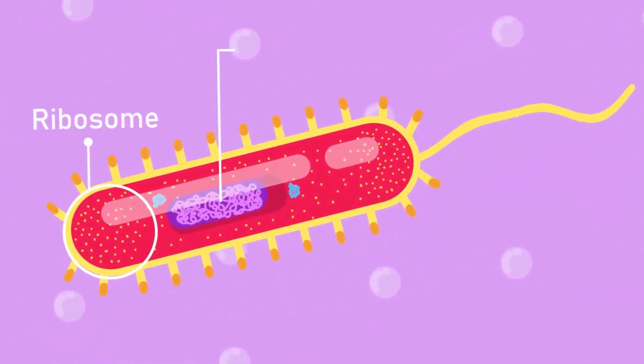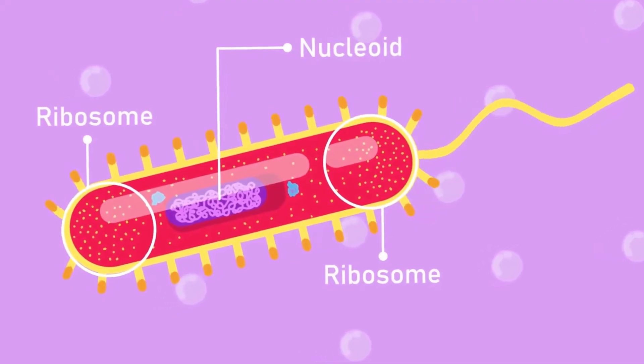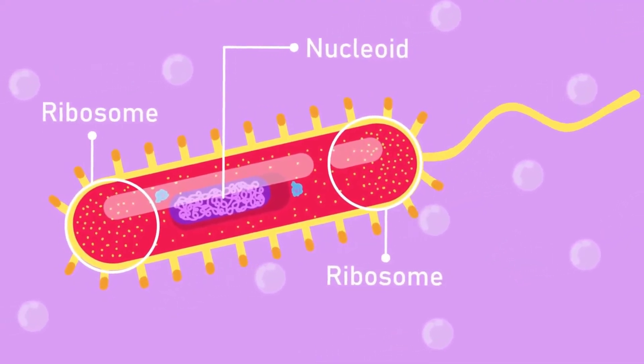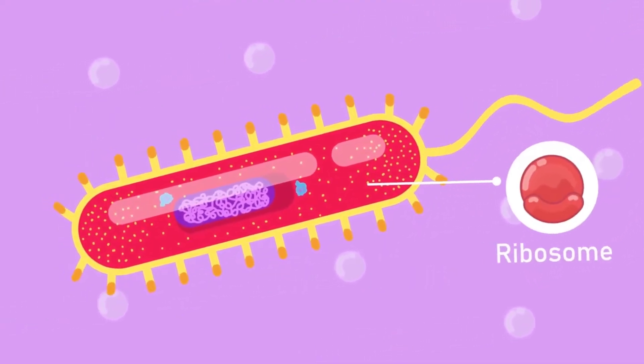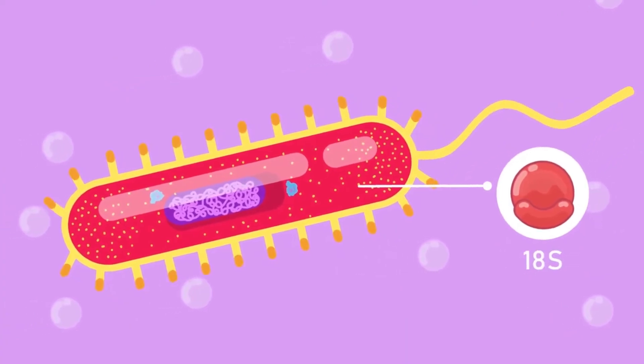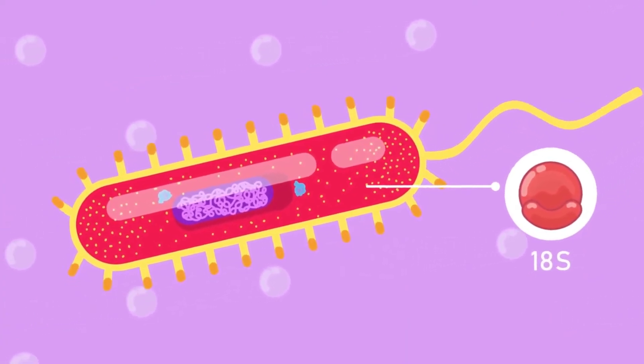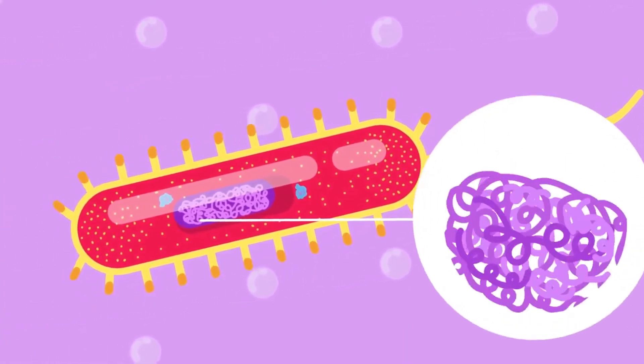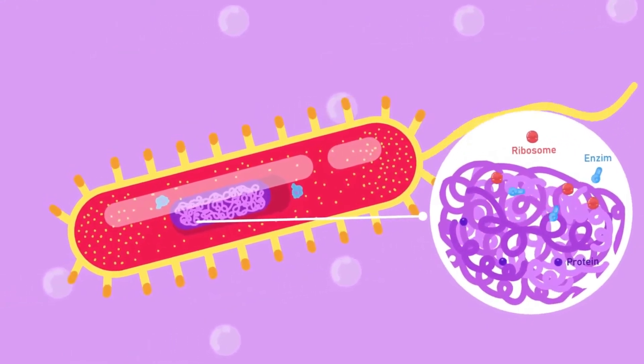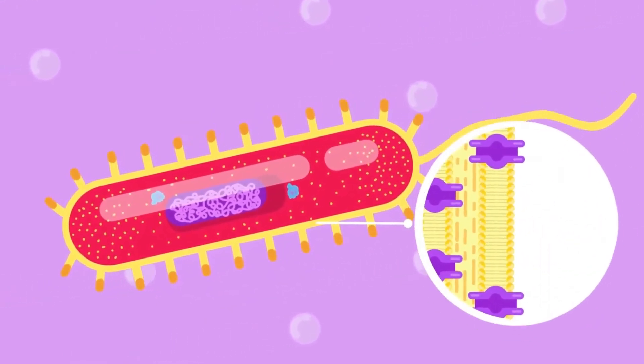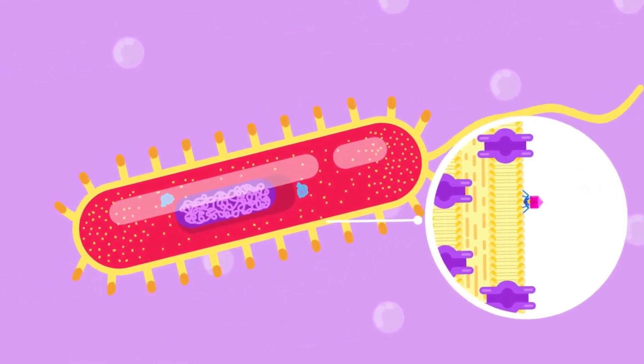The genetic material of prokaryotes is present freely in the cytoplasm. Together with few organelles, prokaryotes have slightly smaller ribosomes, about 18 nanometers in diameter, also denoted as 18S. None of the organelles are membrane bound. Their cell wall functions as protection from the external environment.